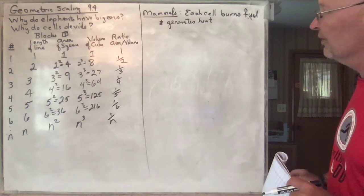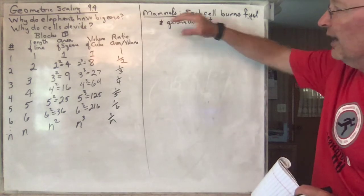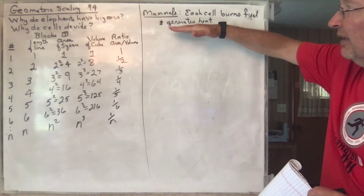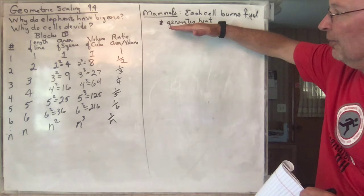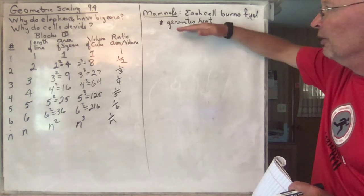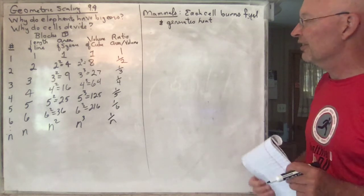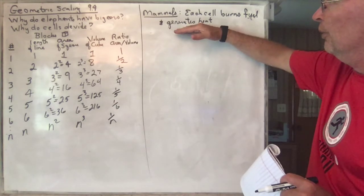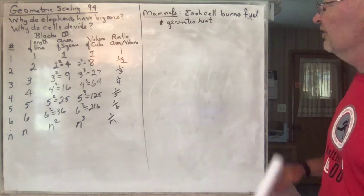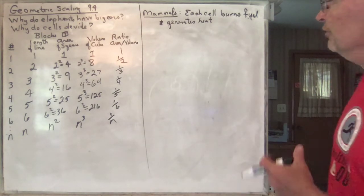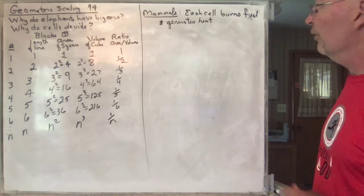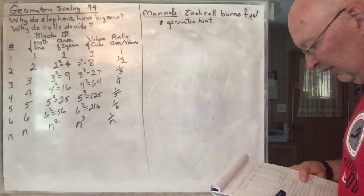For mammals, we rely on homeostasis — our body finds just the proper temperature. For humans, somewhere around 98 degrees; they've discovered it's actually a little bit less than 98.6 now. That's kind of where we tend to thrive, because our cells are each burning fuel. Each one of those things burns and generates heat.